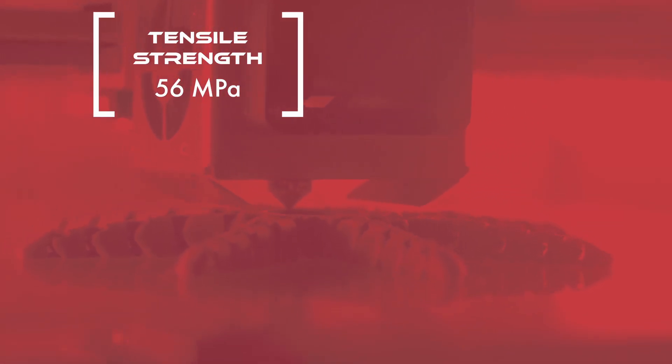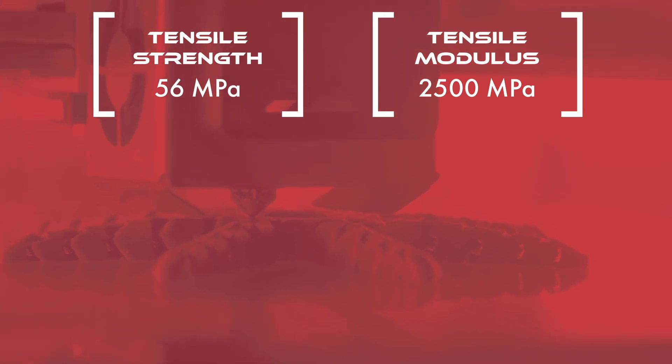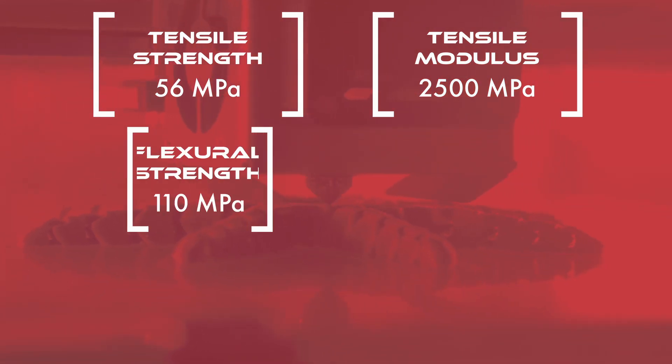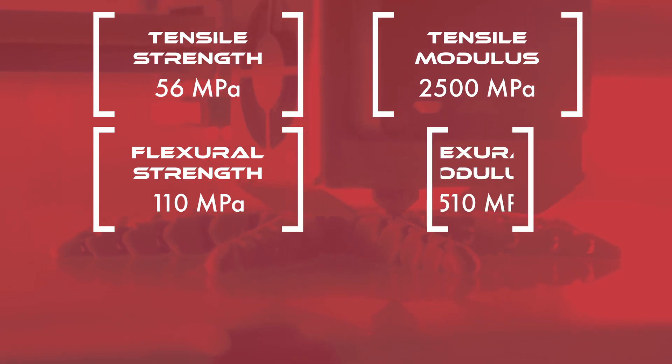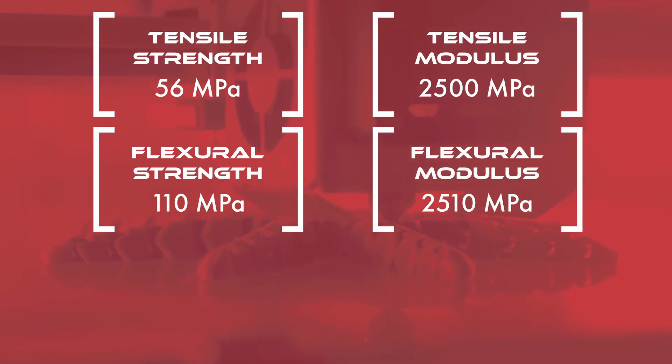One of the primary reasons Altem 1010 is used in these top-of-the-line industries is because of its improved temperature and mechanical properties when compared to more commoditized materials. In terms of mechanical properties, Altem 1010 boasts a tensile strength of 56 MPa, a tensile modulus of 2500 MPa, a flexural strength of 110 MPa, and a flexural modulus of 2510 MPa.